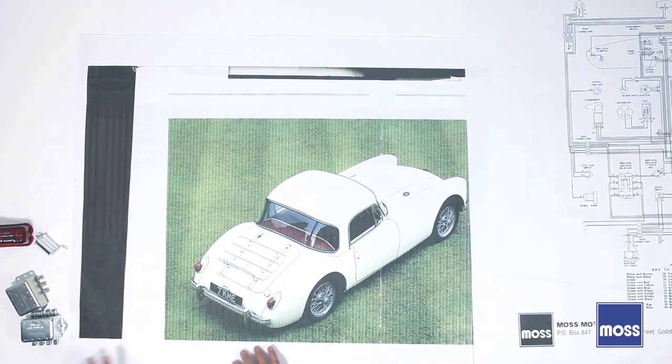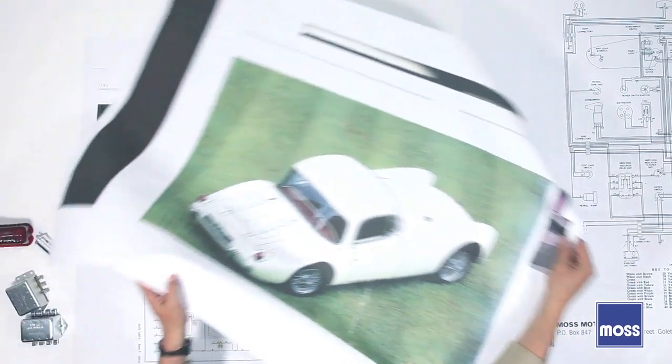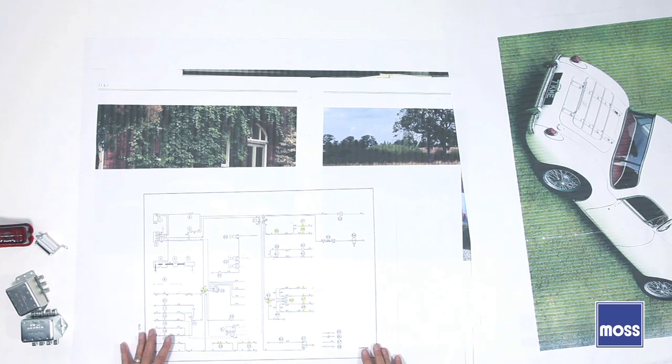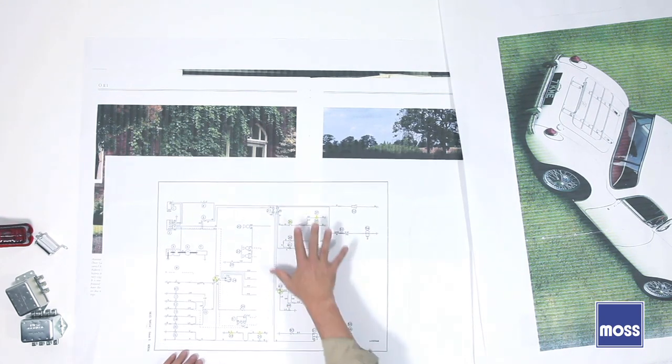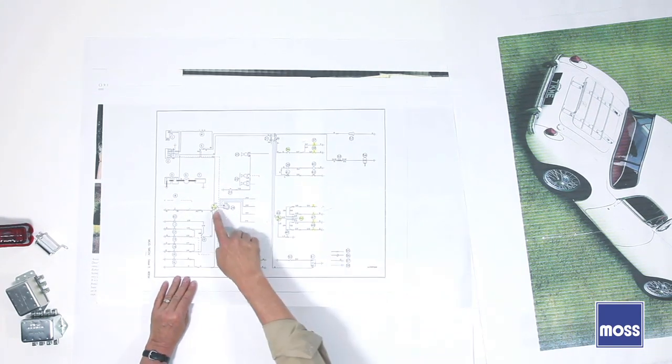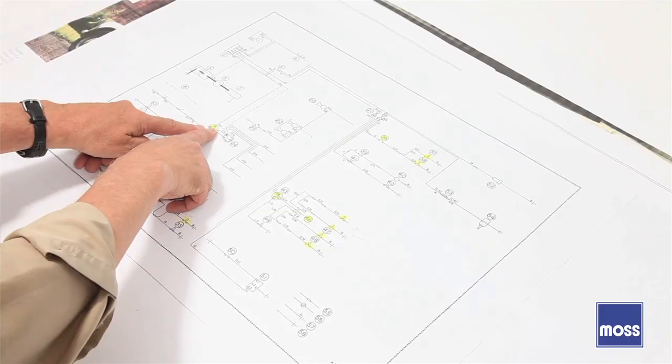The next generation of the MGA was the 1600. I told you earlier that they would occasionally have to refabricate or redesign these cars or parts of them. This is the wiring diagram from the 1600. Note, I'll make it up here where you can see it. This is our light switch.